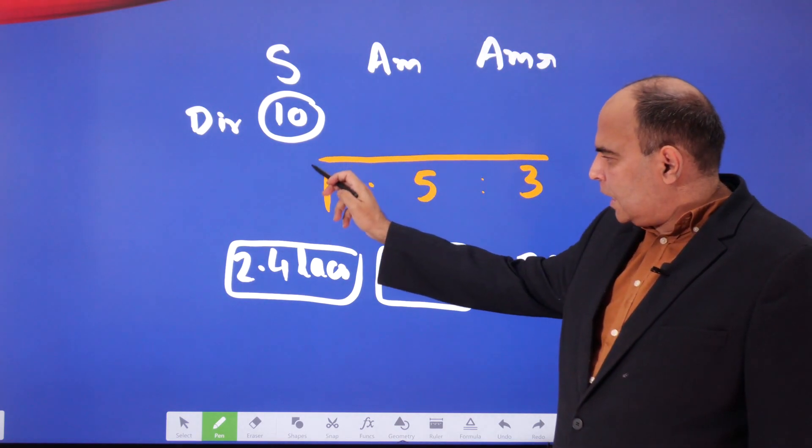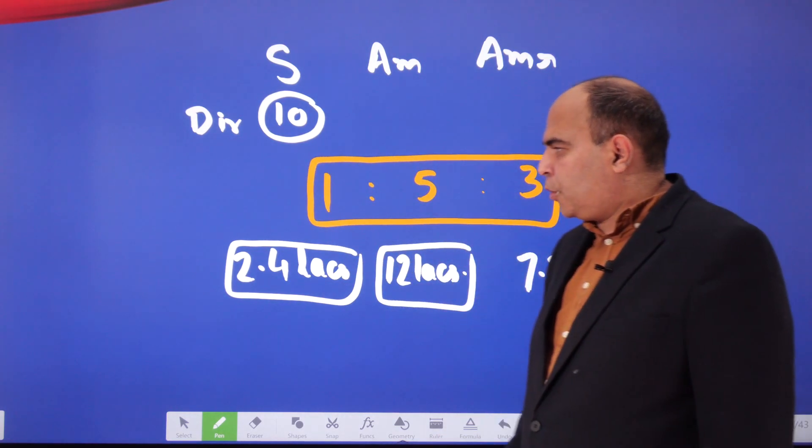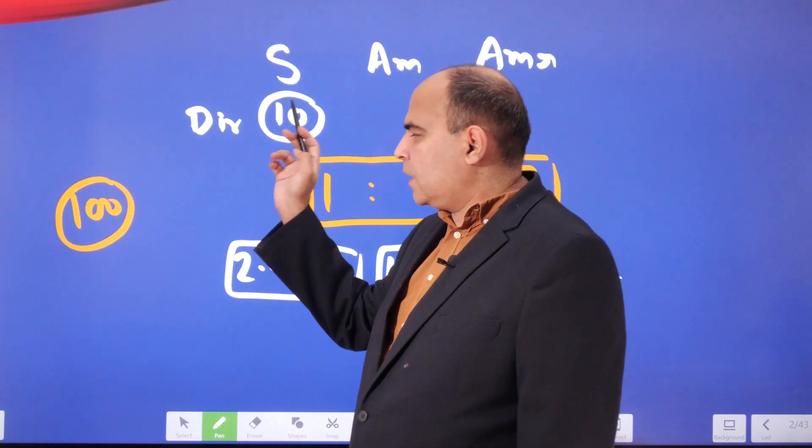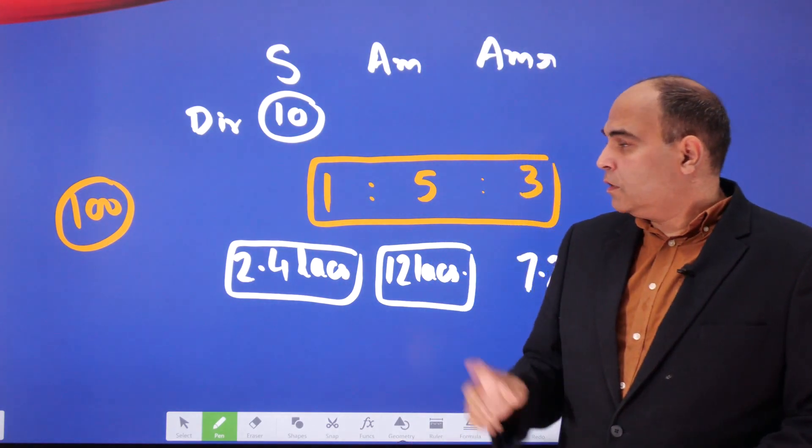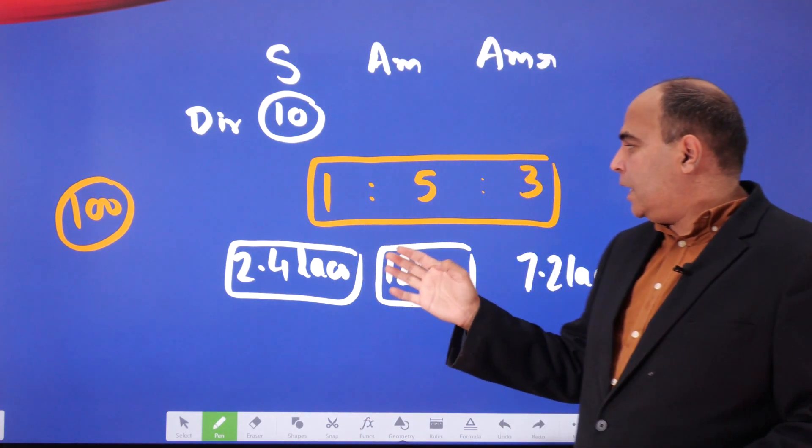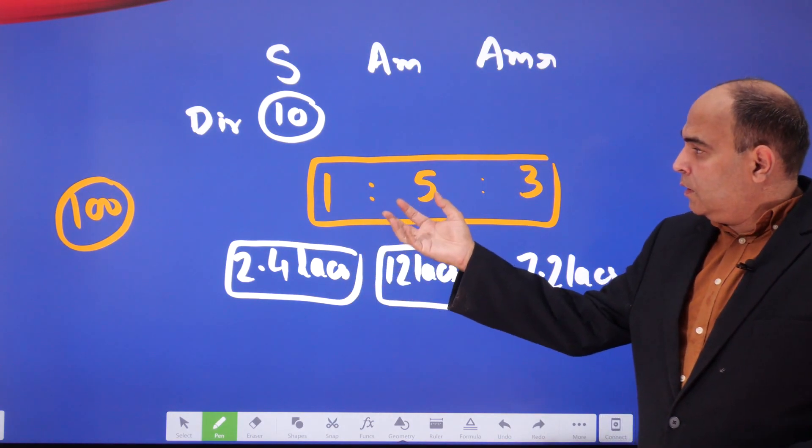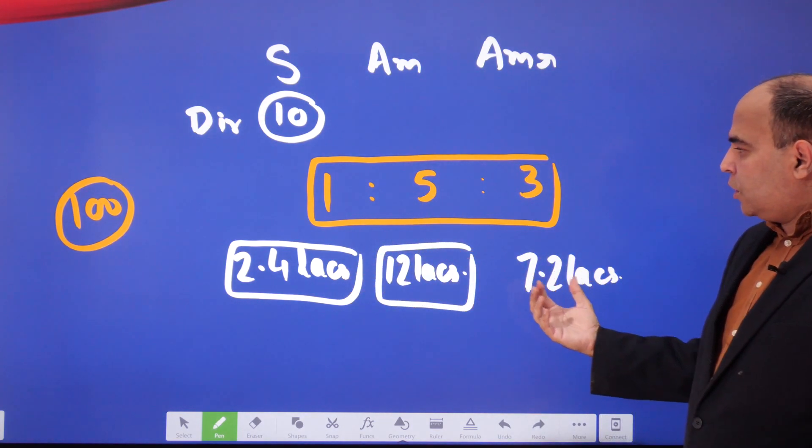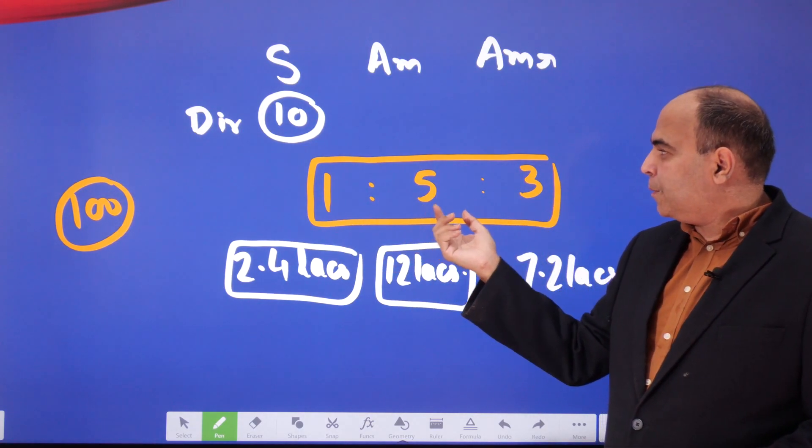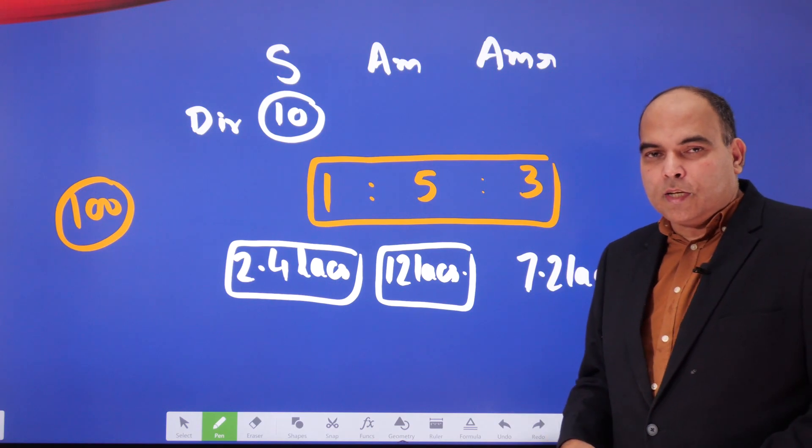What you have to understand at this point is that out of the hundred profit coming to the business, ten will go to the director Sunil as his share of managing the business, and the remaining 90 is going to get shared between Sunil, Amitesh, and Amritesh in the ratio 1:5:3. That means out of the 90, 10 Sunil will get, 50 Amitesh will get, and 30 Amritesh will get.